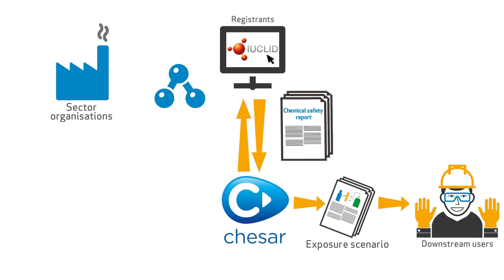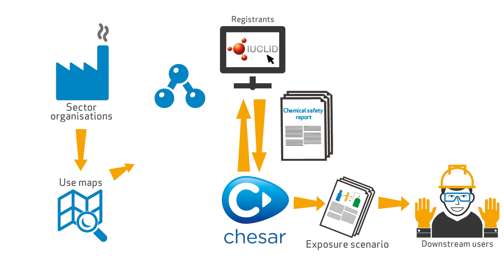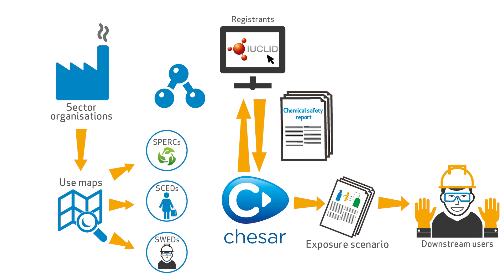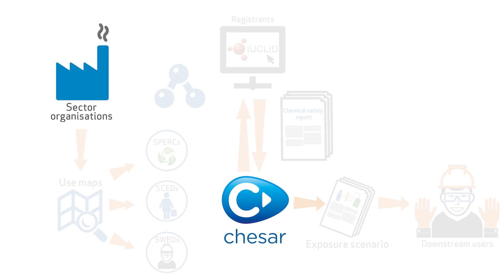Different industry sectors develop importable content such as use maps to inform about the uses of chemicals in a harmonized and structured way, SPERCs to inform about environmental release values and related conditions of use, SCEDs to inform about the conditions of use by consumers, and SWEDs to inform about the conditions of use by workers.